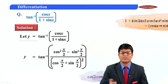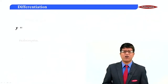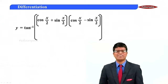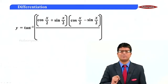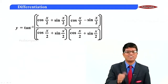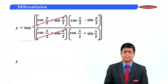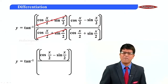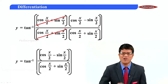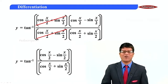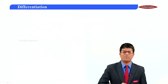So y equals tan inverse of (cos(x/2) + sin(x/2))(cos(x/2) − sin(x/2)) upon (cos(x/2) + sin(x/2))². The factor (cos(x/2) + sin(x/2)) cancels, leaving y equal to tan inverse of (cos(x/2) − sin(x/2)) upon (cos(x/2) + sin(x/2)). Whenever cos and sine appear in both numerator and denominator, we divide numerator and denominator by cos(x/2).